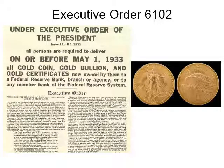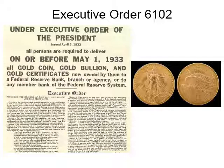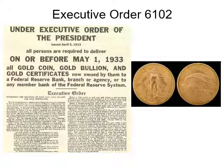Executive Order 6102 was also a very important and interesting executive order. It was signed on April 5, 1933 by Franklin Roosevelt, and it forbid the hoarding of gold coin, gold bullion, and gold certificates within the continental United States. The executive order was made under the authority of the Trading with the Enemy Act of 1917, as amended by the Emergency Banking Act in March 1933.